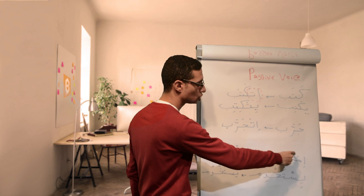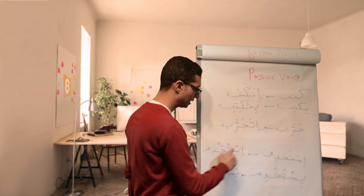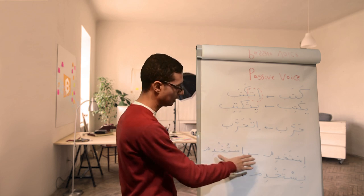So istakhdim, it will be istukhdim. So you will remove here the fatha from the ta and it will be damma, istukhdim.